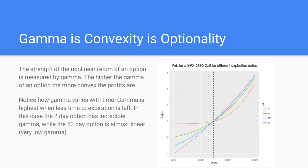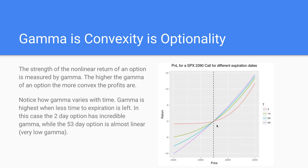You can clearly see in the graph how optionality changes with time. The option about to expire in just two days is incredibly optionally rich — profits grow tremendously and losses are small. As you pick options with longer-dated expirations, optionality just disappears. To the point where at just 53 days — not even two months — that option, the purple one, is basically a linear result. You can see it's basically a straight line. The further you go out in expirations, the less optionality you are getting.